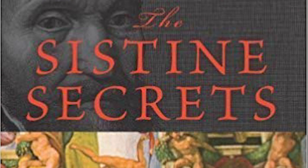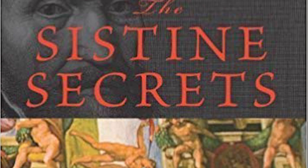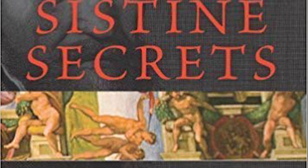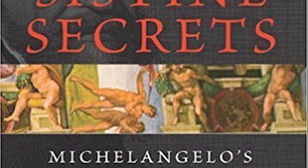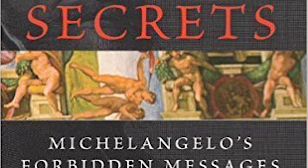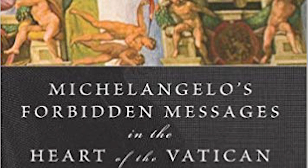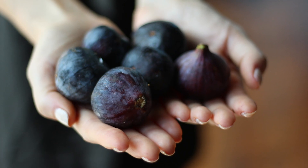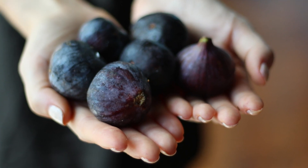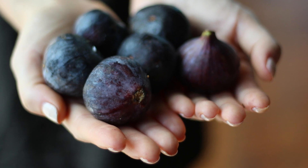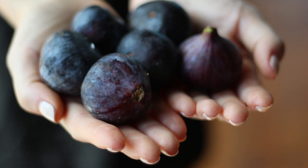Rabbi Benjamin Blech, an associate professor of Talmud at Yeshiva University, believes that Michelangelo did more. In his book The Sistine Secrets: Michelangelo's Forbidden Messages in the Heart of the Vatican, Blech argues that Michelangelo intentionally hid allusions to Judaism in the painting. And the biggest clue to this secret has been right in front of our faces all along, in the form of a simple fig.